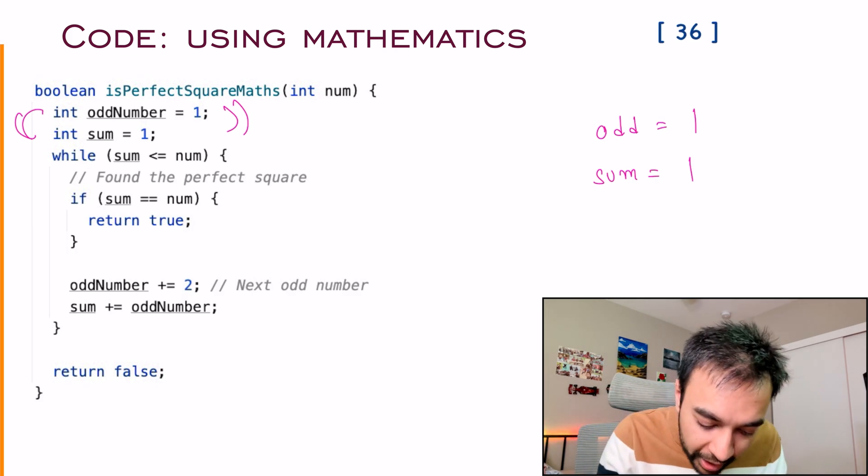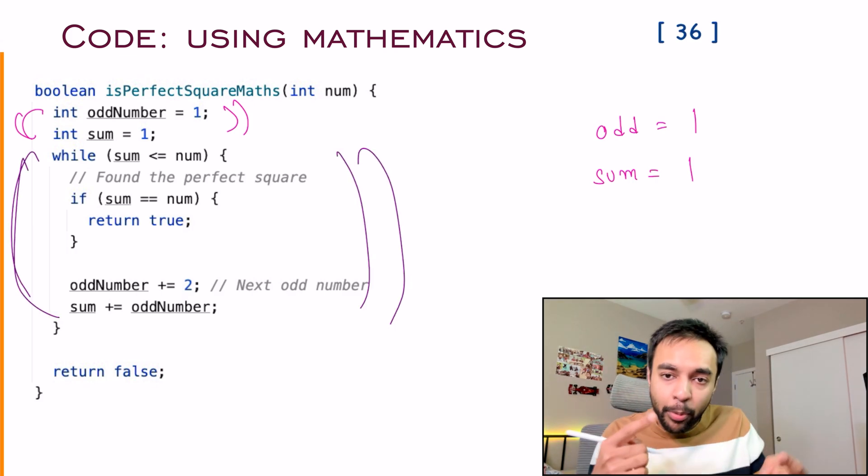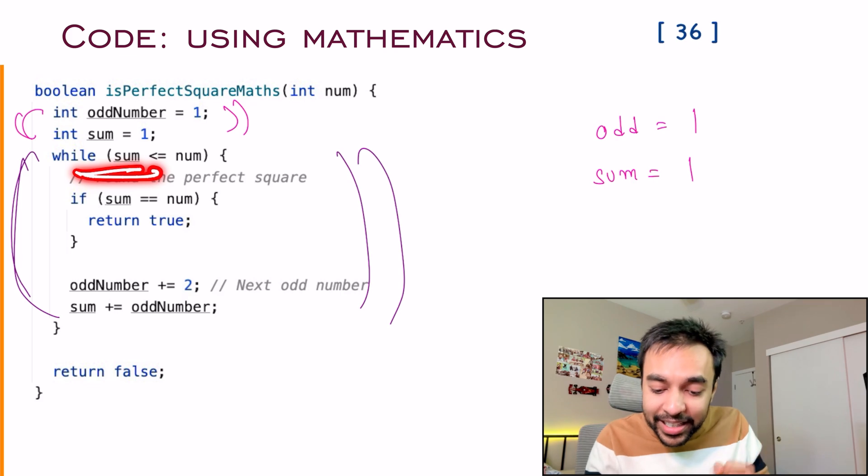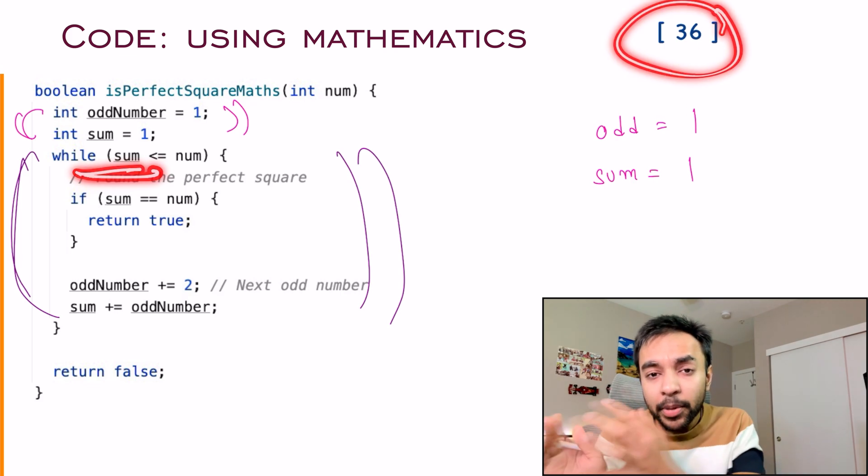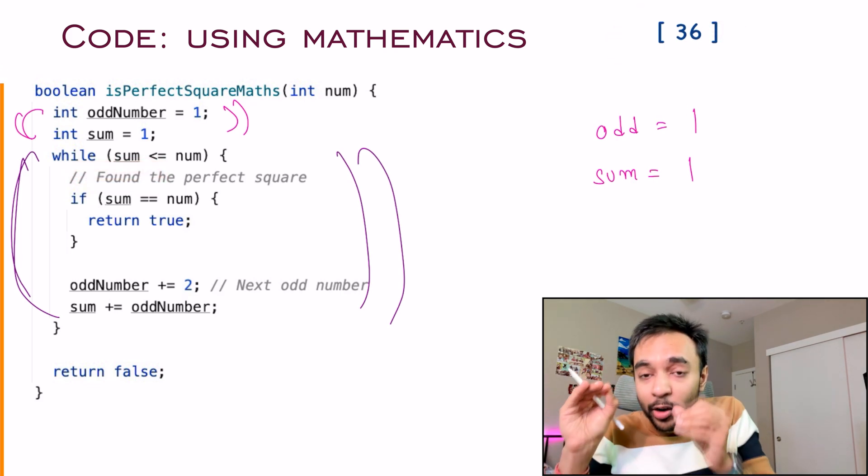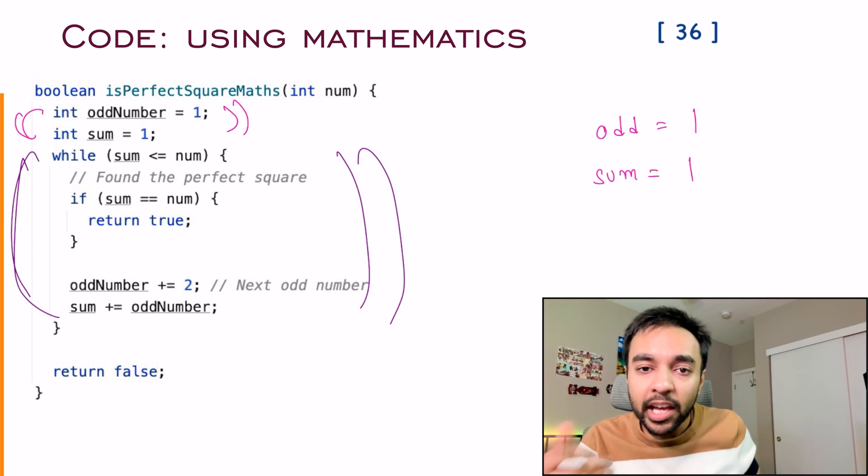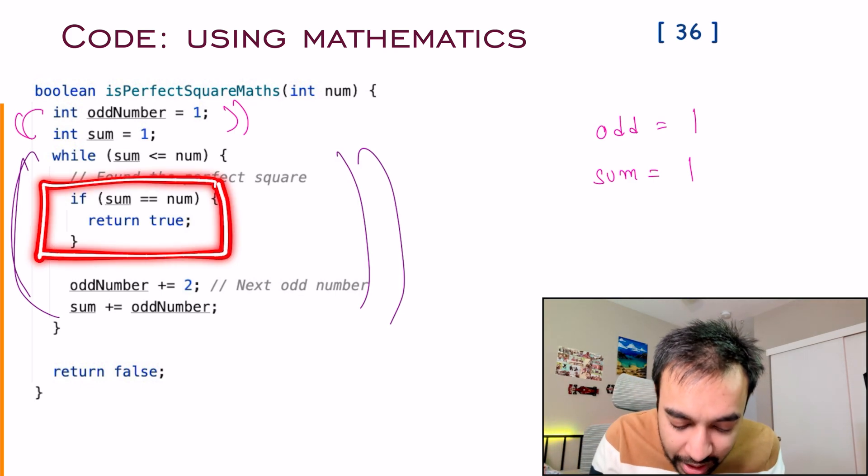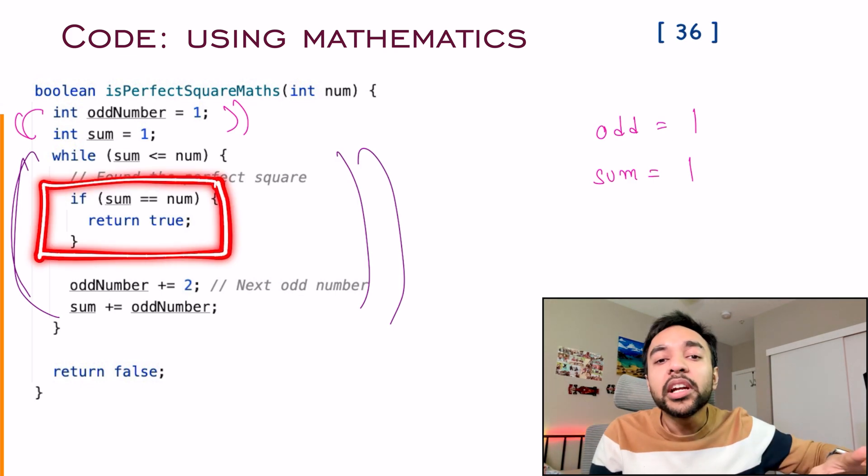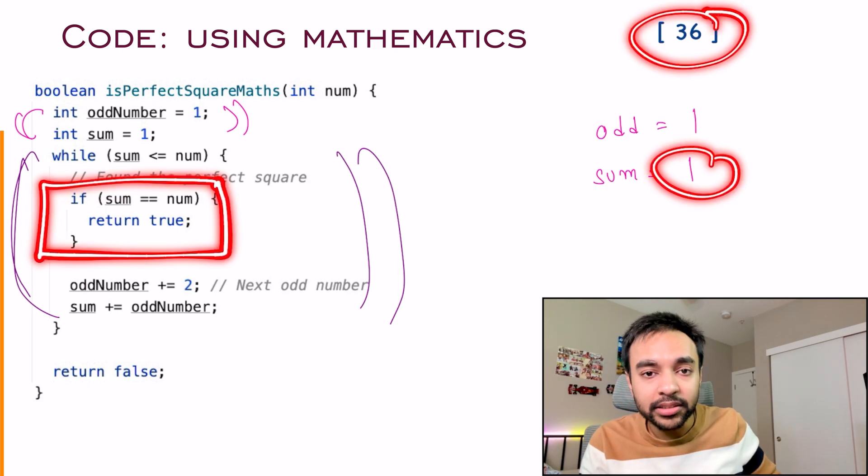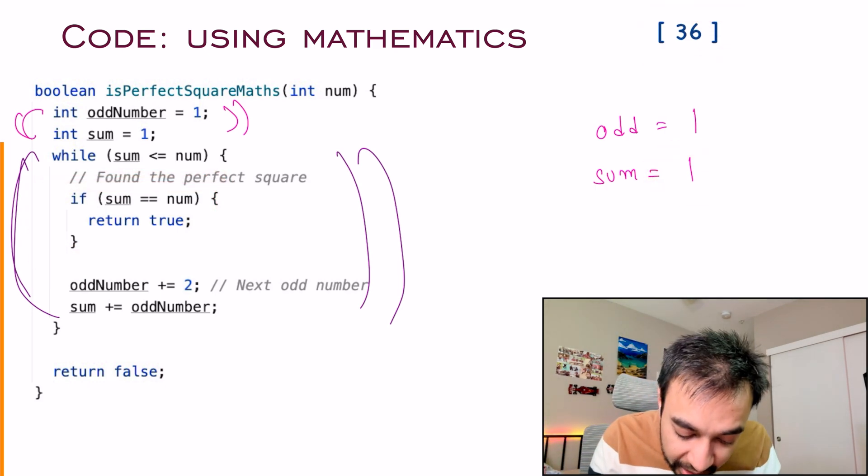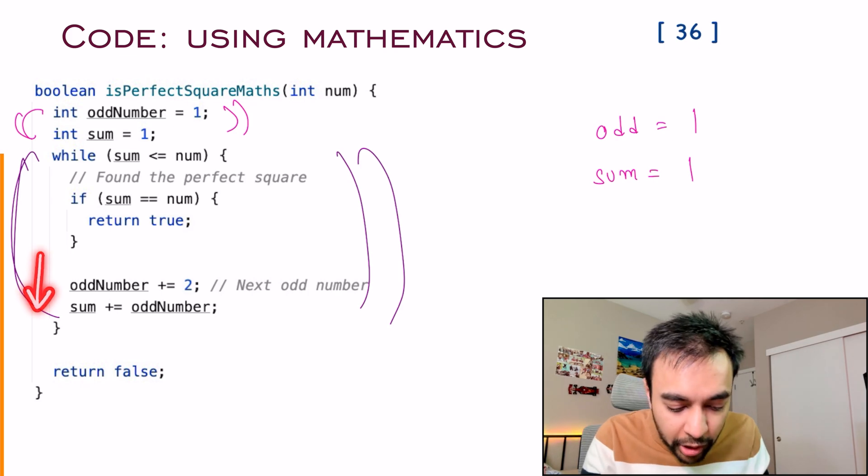You will now run a while loop. And you will keep on running this until your sum is less than this input number. Because that is how you know that you have to stop over here. And what do you do? If this sum equals to number, you can simply return a true. Currently, sum is one and this is 36. So don't do anything. Rather, go ahead. And what are we doing over here? I need to look at the next odd number. So what I do, odd plus of two, and that gives me a three. And I will add this three to my existing sum. So that is exactly what I do over here.